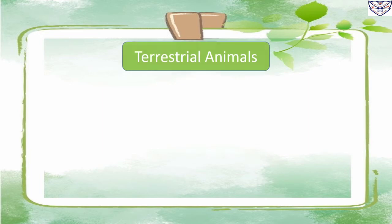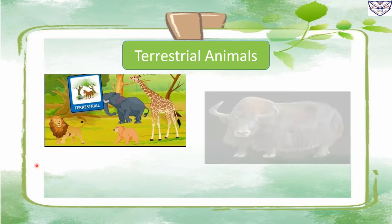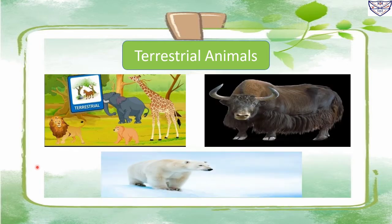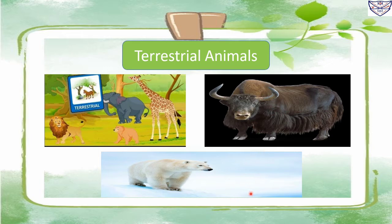Terrestrial animals: animals that live on land are called terrestrial animals. They have features suitable for life on land — legs which help them to walk, and most breathe through lungs. The climatic conditions vary on land: it is cold on mountains and in polar regions, whereas it is very hot in deserts. A yak lives on the mountains, a polar bear lives in the polar region, and a camel is found in the desert.